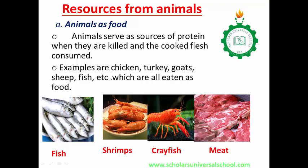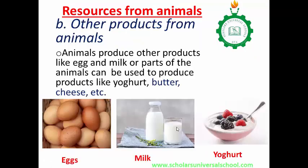For the pig, the flesh is pork, and so on. Examples are chicken, turkey, goat, sheep, fish, etc., which are all eaten as food. The fish, the shrimp, the beef, the meat — they are all animals that serve as food and can be eaten as food.